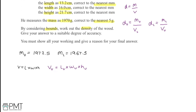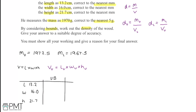Setting up a table: the length is 13.2, width is 16.0, and height is 21.7. All are measured to the nearest millimetre, so we go half a millimetre (0.05 cm) above and below each. Upper and lower bounds: length 13.25 and 13.15; width 16.05 and 15.95; height 21.75 and 21.65.